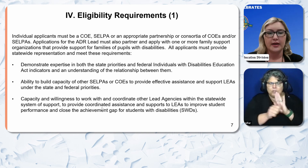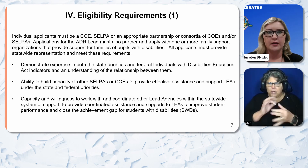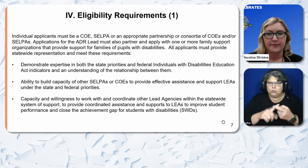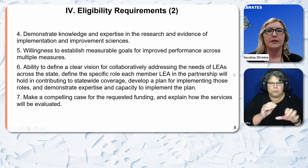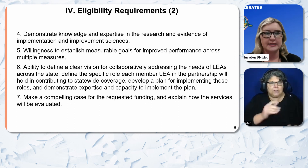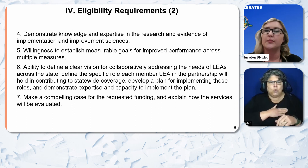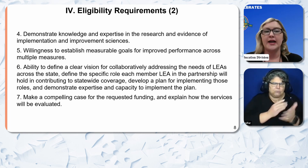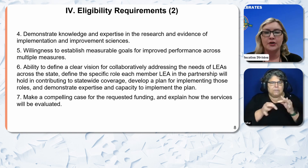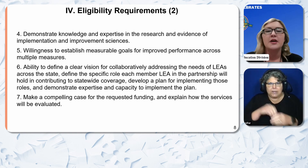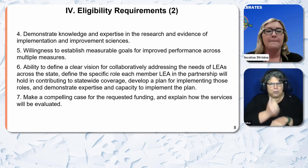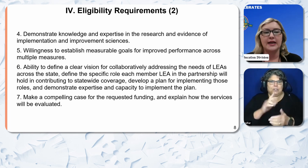Applicants must demonstrate capacity and willingness to work with and coordinate other lead agencies within the statewide system of support to provide coordinated assistance to LEAs to improve performance and close the achievement gap for students with disabilities. They must also demonstrate knowledge and expertise in research and evidence of implementation and improvement sciences, willingness to establish measurable goals, ability to define a clear vision for a collaborative addressing the needs of LEAs across the state, and make a compelling case for the requested funding explaining how services will be evaluated.